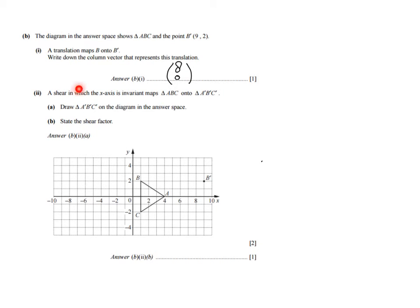Then, a shear in which the x-axis is the invariant line maps triangle ABC onto its image A apostrophe, B apostrophe, C apostrophe. We already have one point of it but not the other two. Draw triangle A apostrophe, B apostrophe, C apostrophe on the diagram in the answer space — that's worth two marks.